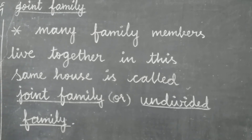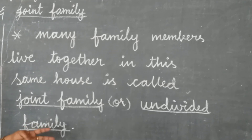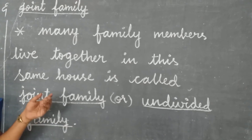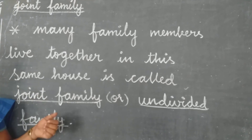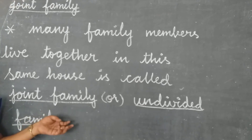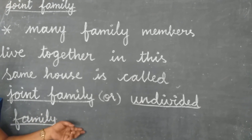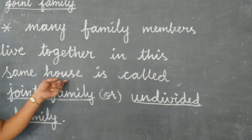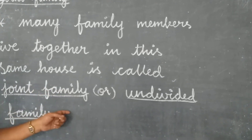For example: grandfather, grandmother, father, mother, brother, sister, or children — and one or two cousins live in the same house. It is called joint family.